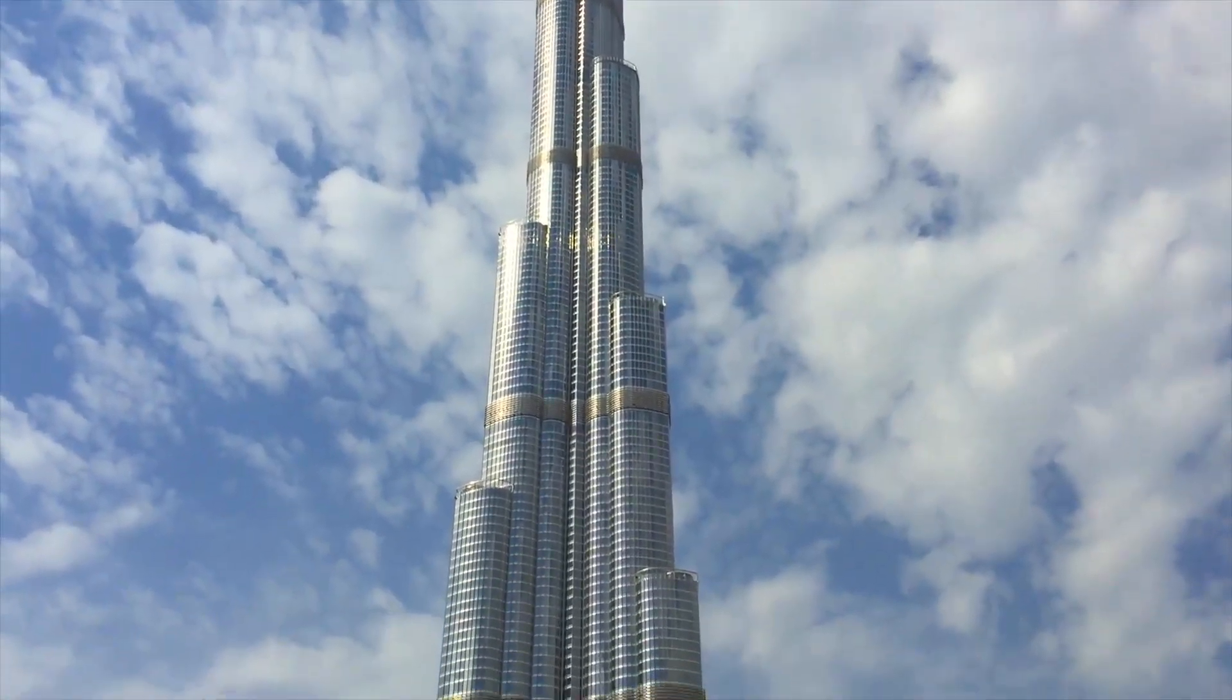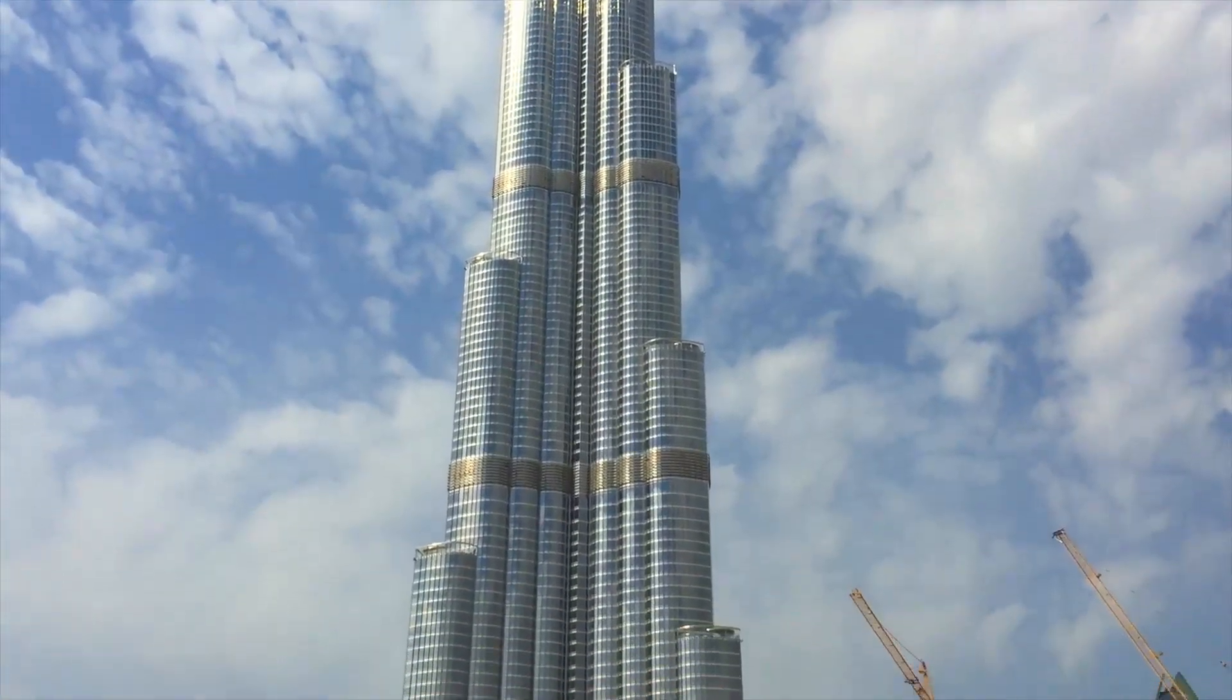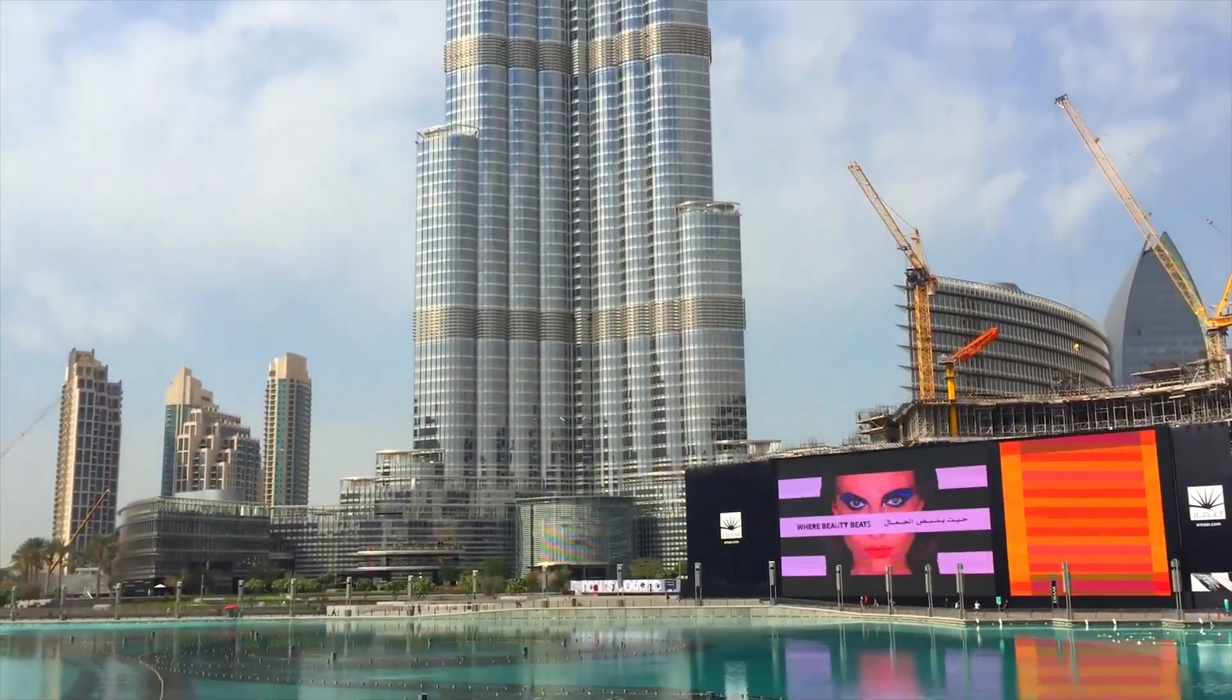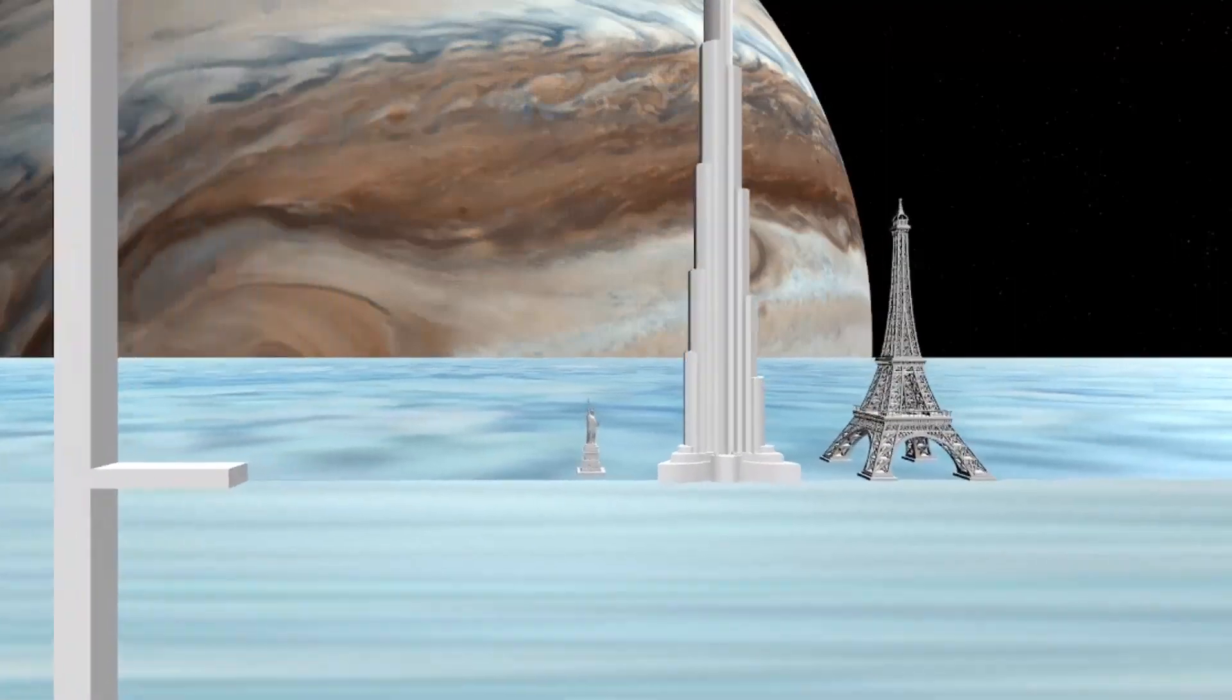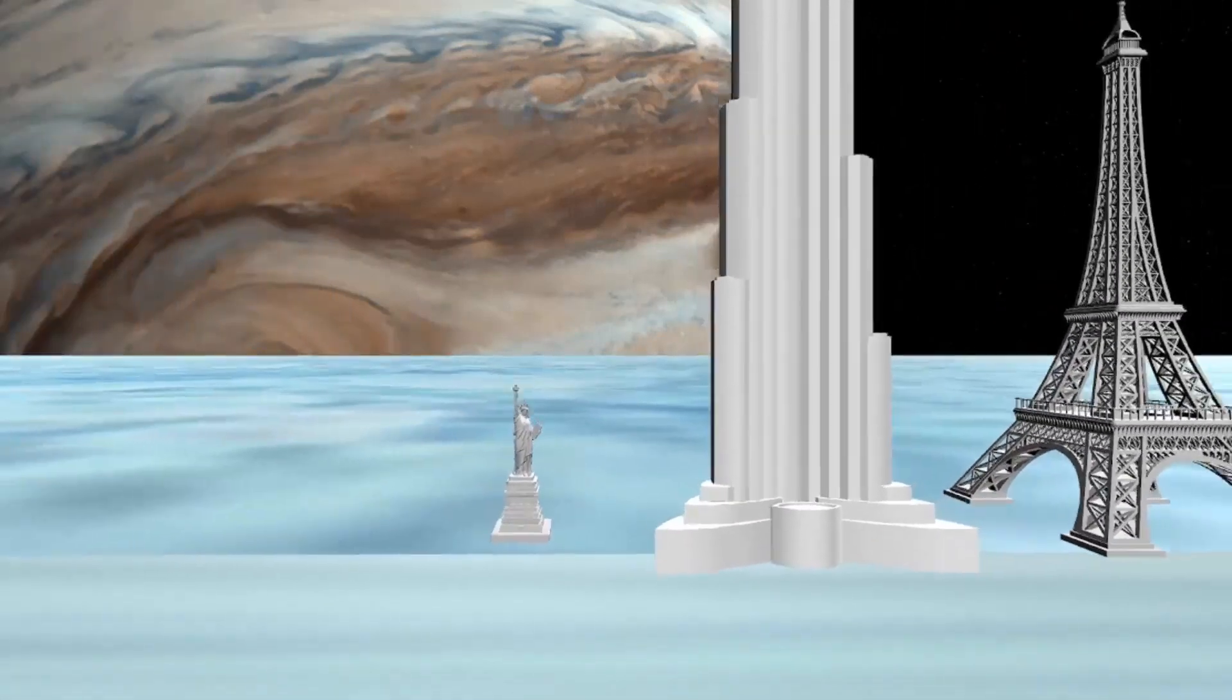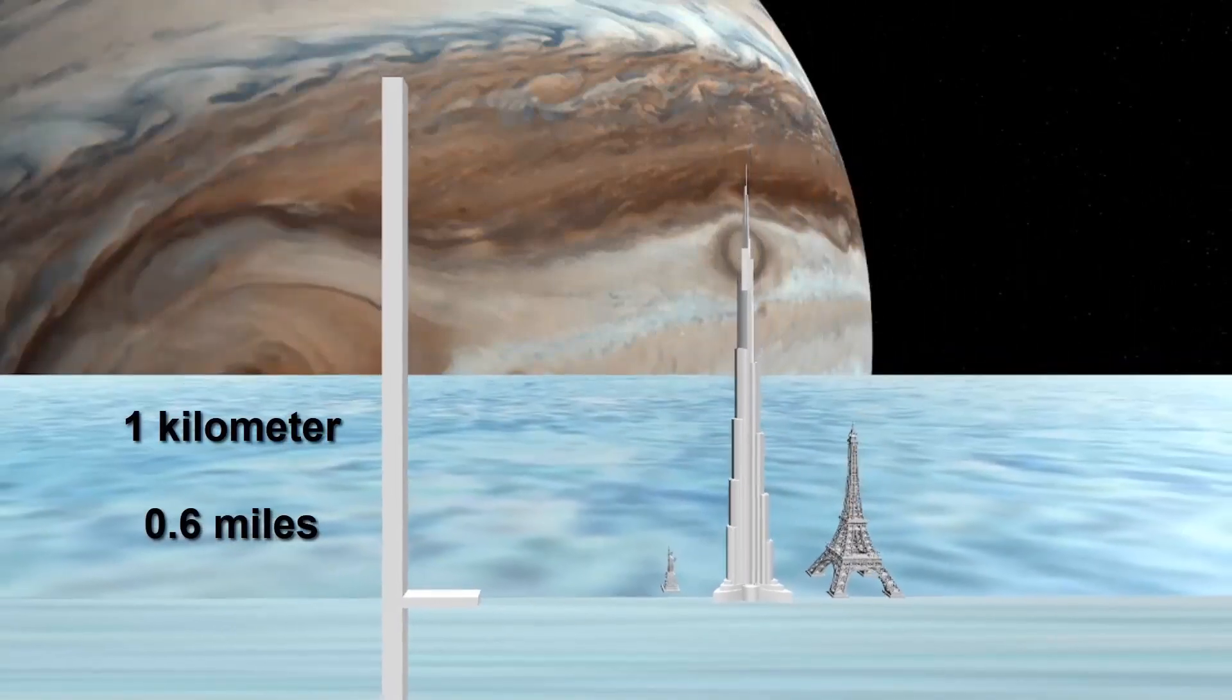The tallest building in the world currently is the Burj Khalifa, standing at 830 meters tall. It is 170 meters short of 1 kilometer, still an impressive height. Each line here represents 1 kilometer.